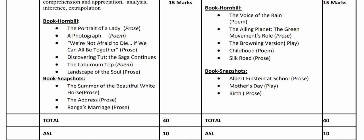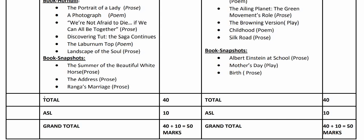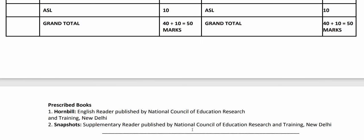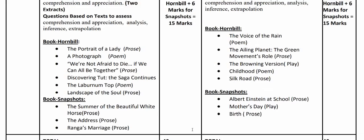When we add up all three sections, the weightage adds up to 40 marks. Assessment for speaking and listening, including the e-portfolio and all internal work, adds up to 10 marks. So 40 plus 10 equals 50 marks for Term 1. The prescribed books are Hornbill English Reader and Snapshots Supplementary Reader, both published by the National Council of Educational Research and Training, New Delhi.